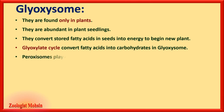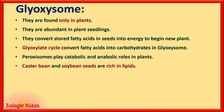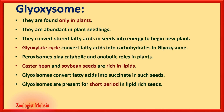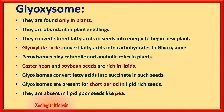The glyoxylate cycle is a cascade or pathway of many reactions. Peroxysomes play both catabolic and anabolic roles in plants. Castor bean and soybean seeds are rich in lipids — an important fact to remember. Glyoxysomes convert fatty acids into succinate in such lipid-rich seeds. They are present only for a short period in lipid-rich seeds and are absent in lipid-poor seeds like pea.